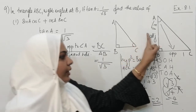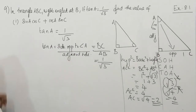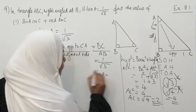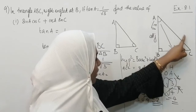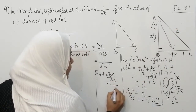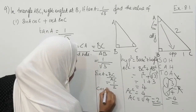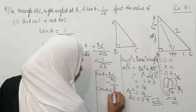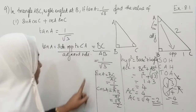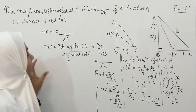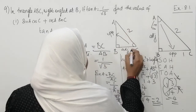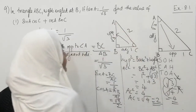Now we have found the values for AB, BC, and AC. We can write all the trigonometric ratios. Sin A means opposite divided by hypotenuse, so sin A equals BC by AC, which is 1 by 2. Cos A is adjacent divided by hypotenuse, so cos A equals AB by AC, which is root 3 by 2. By Pythagoras theorem the hypotenuse is 2, base is 1, and height is root 3.